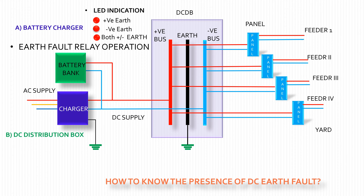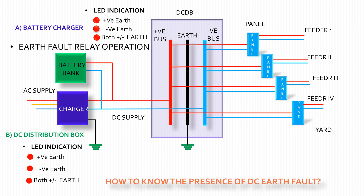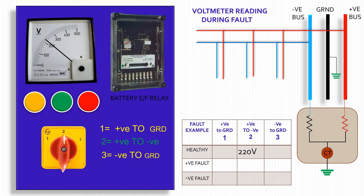From the DC distribution board (DC DB) — LED indication and earth fault relay operation, if any. Also by reading of the voltmeter: the reading of the voltmeter at the charger and DC DB. When a DC positive or negative earth fault occurs, the reading of the voltmeter at DC DB or charger shows source voltages, as shown in the example here. By using a suitable multimeter, the same may also be observed.